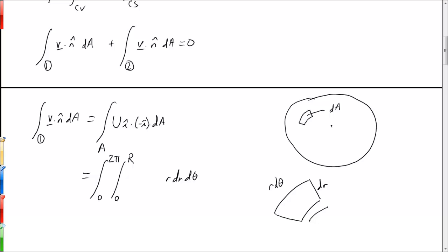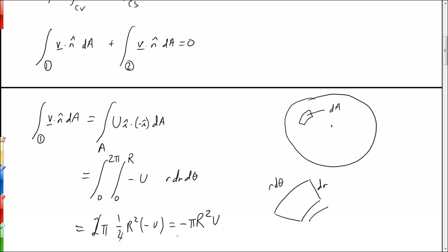i-hat dotted with negative i-hat gives minus one, so we get minus u. The integral from 0 to 2π of dθ gives 2π, and the integral of r dr gives r²/2. All together, the twos cancel and we get minus πR²u. This is the integral over the control surface at section one.